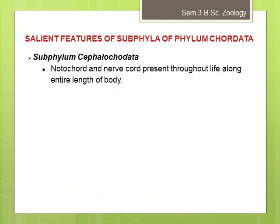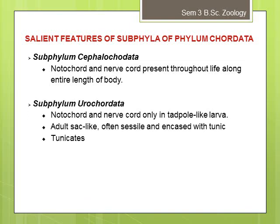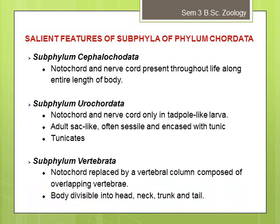The salient features of the three subphyla: in Cephalochordata, the notochord and nerve cord are present throughout the life, along the entire length of the body. In Urochordata, notochord and nerve cord are present only in the larva, which is tadpole-like; the adult is sac-like and sessile, lacking chordate characters, and is encased in a protective tunic membrane — hence urochordates are commonly known as tunicates. In subphylum Vertebrata, the notochord is replaced by a vertebral column, and the body is divisible into distinct head, neck, trunk, and tail.